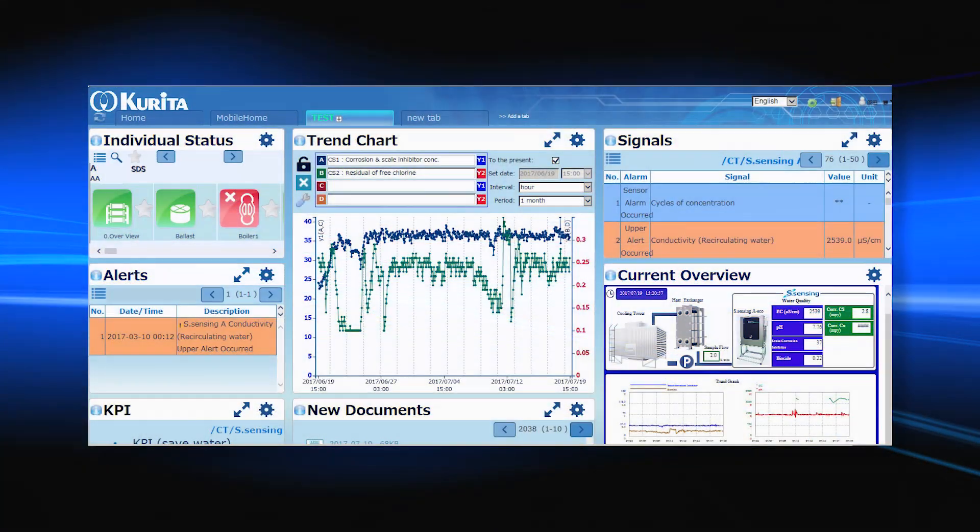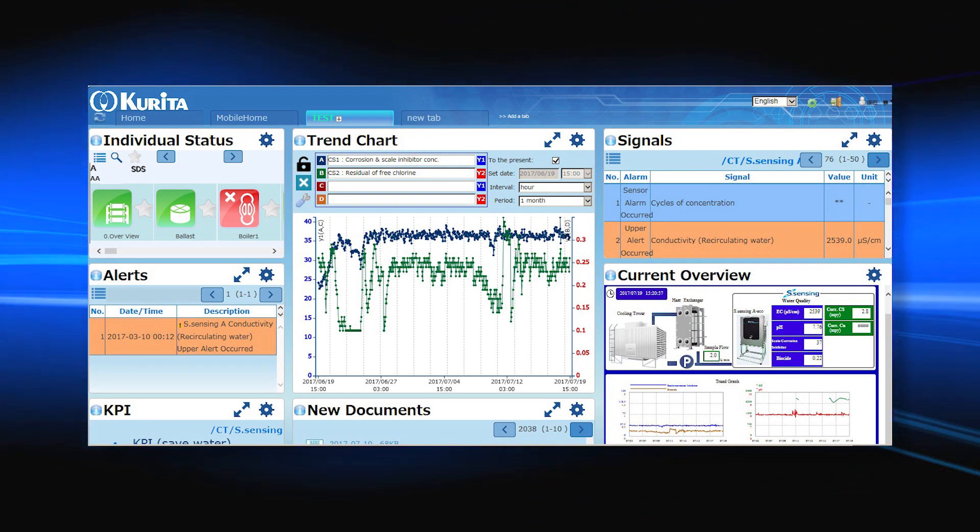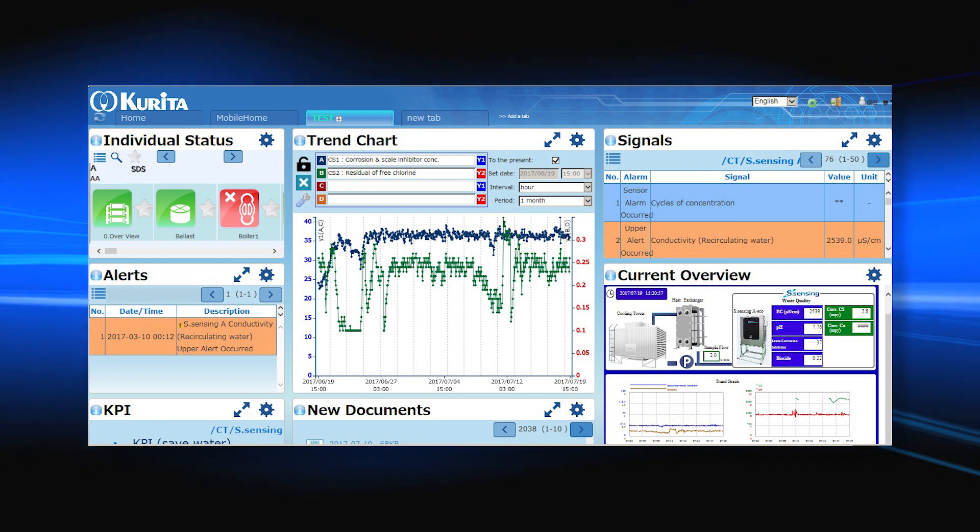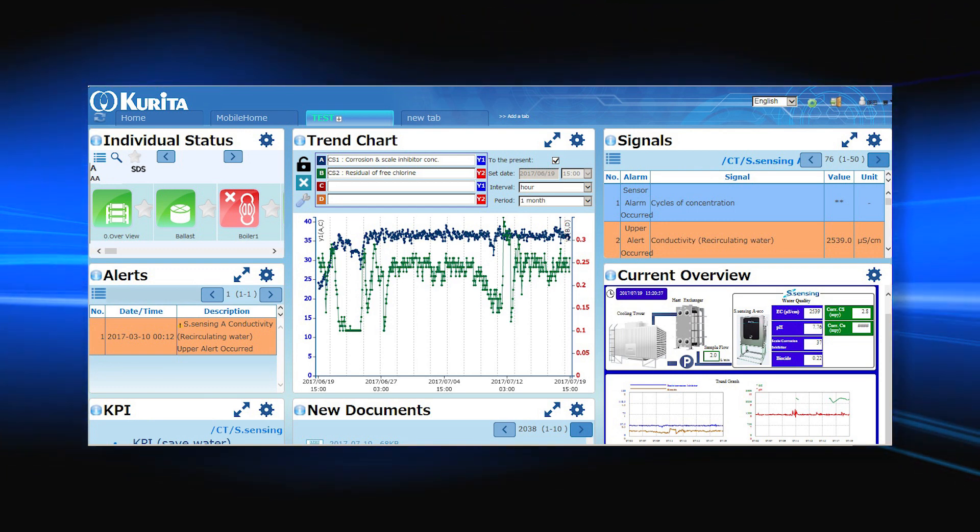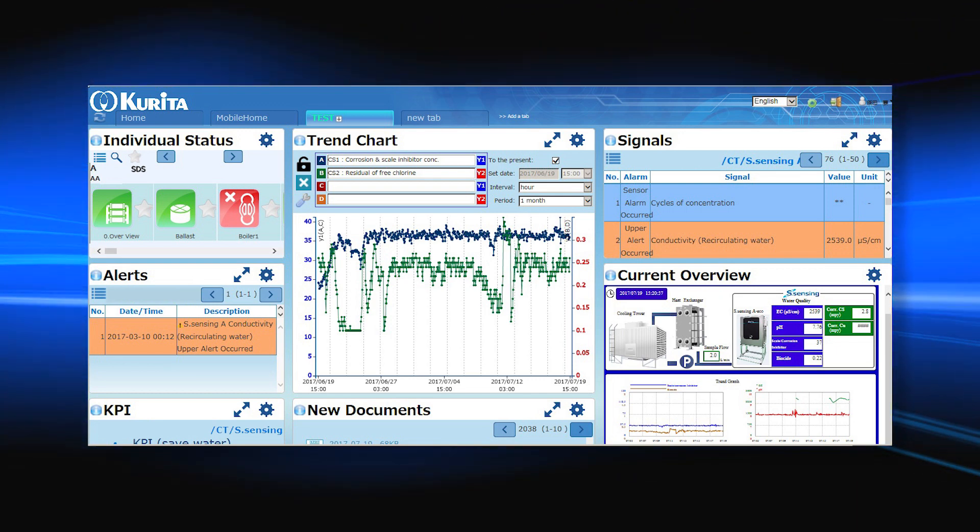The factors that can be monitored are information on water quality, such as pH, turbidity, and chemical concentration, as well as operational information, including flow rate, temperature, pressure, and the turning on and off of pumps. The system allows such data to be checked in real time.